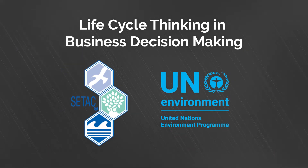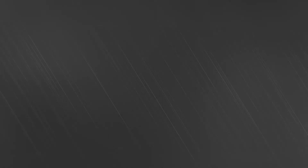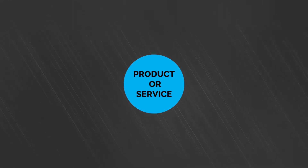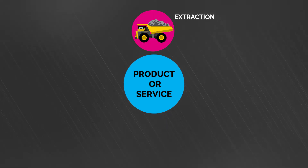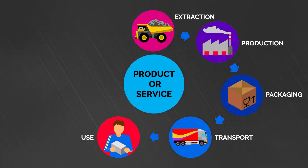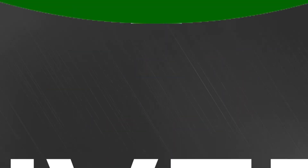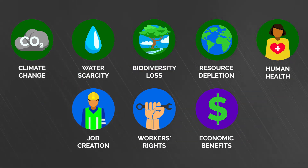Our focus will be on using life cycle thinking in business decision making. Life cycle thinking is a holistic approach that helps expand the view of a product or service to include all stages of its life cycle — from resource extraction to production, to how and where it is used, and finally its disposal or recycling. It is also important to consider all different types of environmental impacts, and even the social and economic impact of a product or service across its entire value chain.